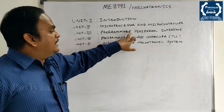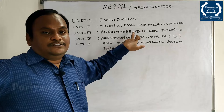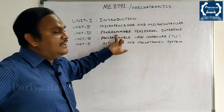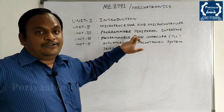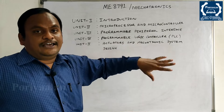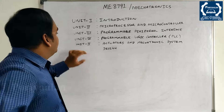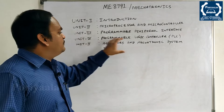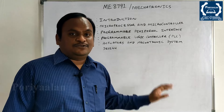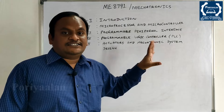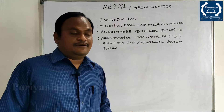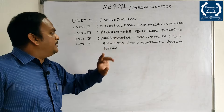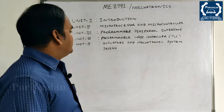In Unit 3, the microprocessor covered is 8255, and here is ADC. In Unit 4, we have Programmable Logic Control — PLC and the architecture of PLC. In Unit 5, we cover Actuators and Mechatronics System Design.